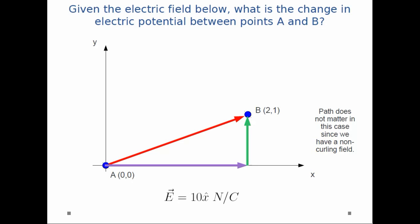Now the moment your field does start spinning around and around, you cannot choose any path you want because you will get different answers. You'll learn about that more in advanced courses in electricity and magnetism. But in this case, path doesn't matter.